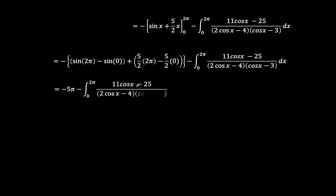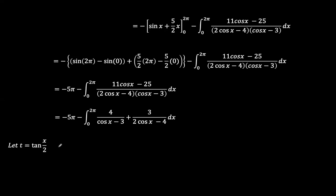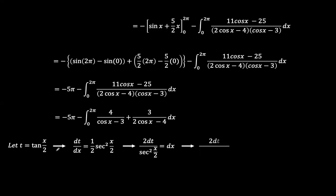Now focusing on the remaining fraction, we decompose into partial fractions: 4/(cos(x) − 3) + 3/(2cos(x) − 4). We apply the Weierstrass substitution: let t = tan(x/2), so dt/dx = (1/2)sec²(x/2), giving dx = 2dt/(1 + t²), using the identity sec²(x/2) = 1 + tan²(x/2).